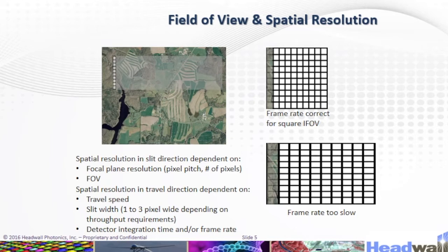Here we have field of view and spatial resolutions. In the top picture you can see that the frame rate is correct for a square IFOV. In the bottom, we see a frame rate that is too slow.